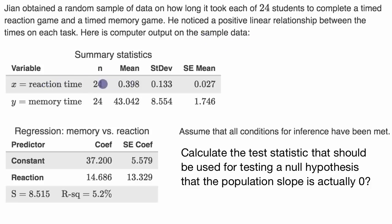So we have some statistics calculated on the reaction time, on the memory time, and then he had his computer do a regression for the data that he collected. We're told assume that all conditions for inference have been met. Calculate the test statistic that should be used for testing a null hypothesis that the population slope is actually zero.